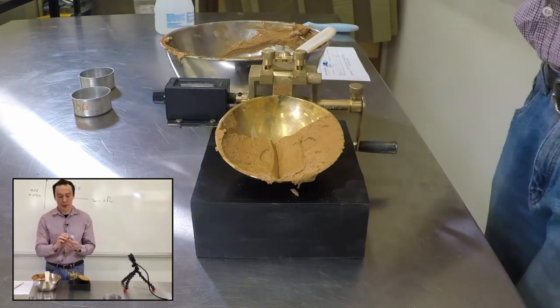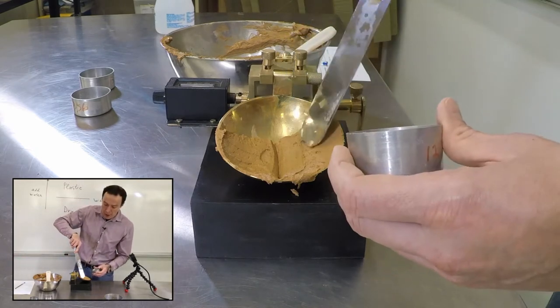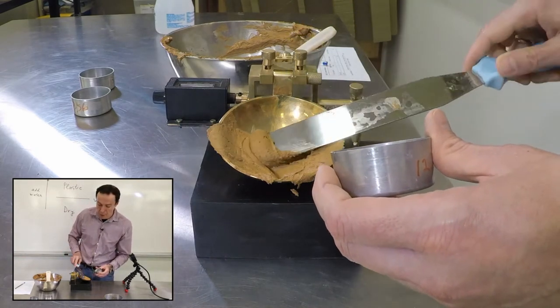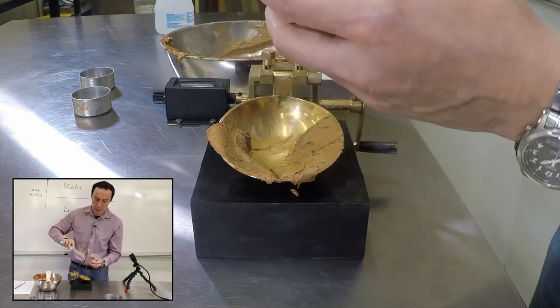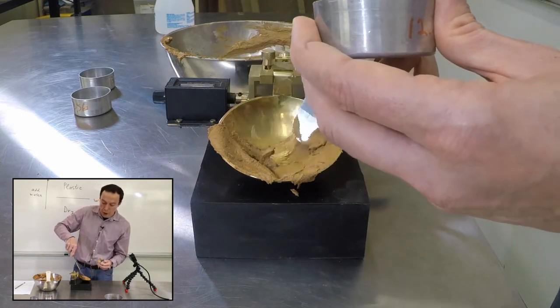We use these tins. For tin number one, we already know the mass. I'll collect soil from the cup. We need to collect enough to get good readings of water content.